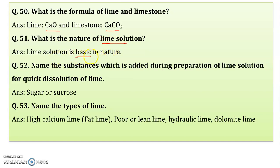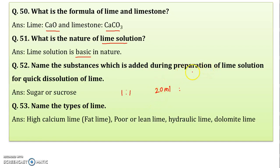Lime is basic in nature. Name the substance added during preparation of lime solution for quick dissolution of lime. Sugar or sucrose is added — in a one-to-one proportion: 20 ml water with 20 grams of sugar. This sugar solution is added to lime for its quick dissolution.